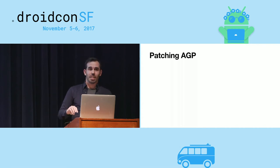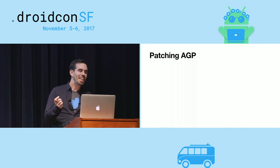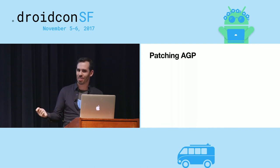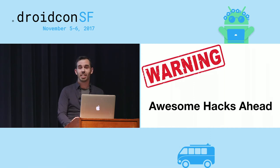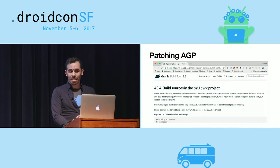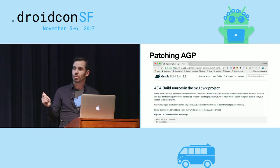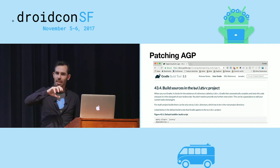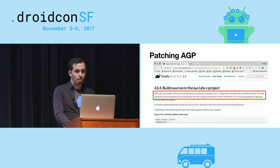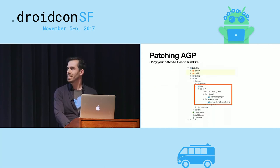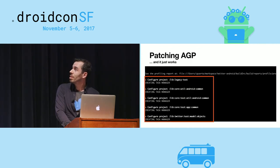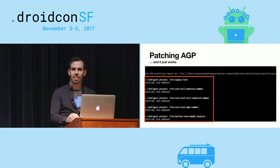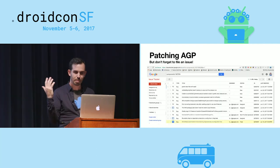You may want to patch AGP to try something, but you wouldn't want to build all of AGP. Gradle has the buildSrc directory, which will compile anything you put in there and place it ahead of everything else in the class path when running Gradle. If you copy any classes from AGP into your local buildSrc directory and make changes there, you will see those changes in the output. This is a simple way to patch bugs or try out fixes in AGP. And please do report the bug.